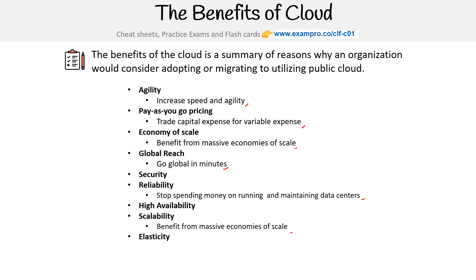You'll notice that AWS has included high availability, elasticity, reliability, and security as new ones. I have always — even in my original cloud practitioner course — had cloud architecture as a separate section and included all these things in there. So it's great to see that AWS has included them.